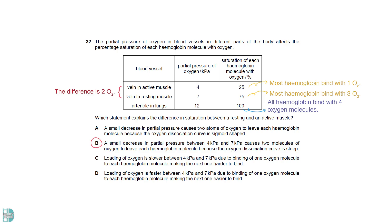B correctly describes this. A is wrong because it says two atoms. C is wrong because the binding should make the next one easier. This is called the cooperative binding. D is incorrect as it states that one oxygen molecule to each haemoglobin molecule.